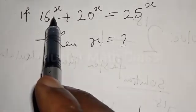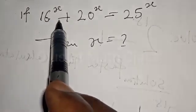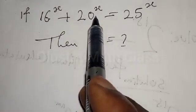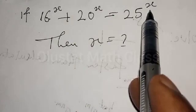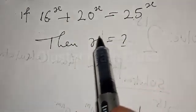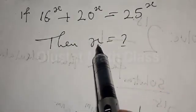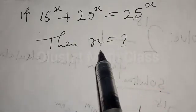If 16 raised to power x plus 20 raised to power x is equal to 25 raised to power x, then x is equal to what?